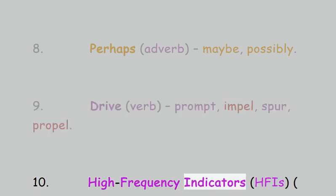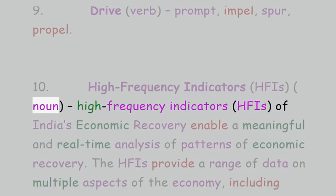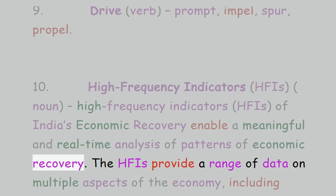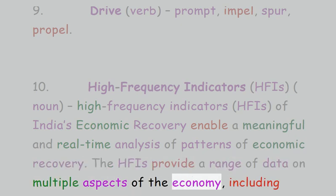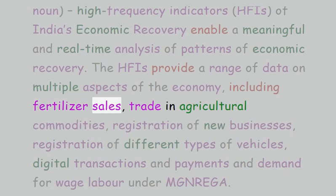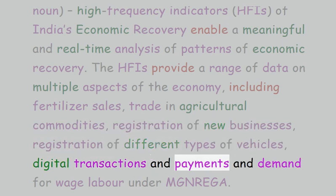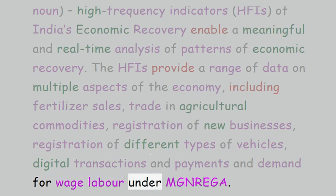10. High-Frequency Indicators (HFIs), noun: High-Frequency Indicators of India's economic recovery enable a meaningful and real-time analysis of patterns of economic recovery. The HFIs provide a range of data on multiple aspects of the economy, including fertilizer sales, trade and agricultural commodities, registration of new businesses, registration of different types of vehicles, digital transactions, and payments and demand for wage labor under MREGA.